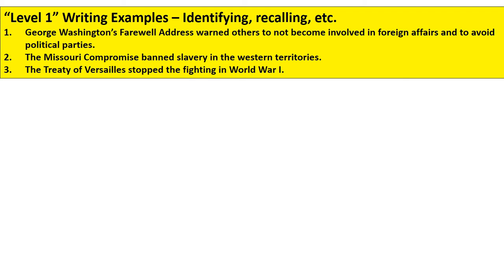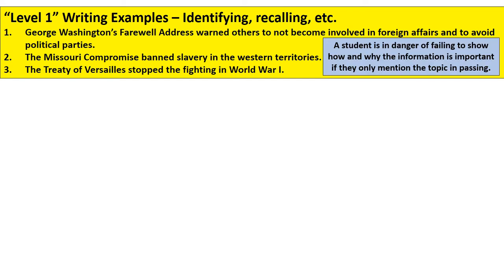Here's what I mean by level one writing. For example: Washington's farewell address warned others not to become involved in foreign affairs and to avoid political parties. The Missouri Compromise banned slavery in the Western territories. And the Treaty of Versailles stopped the fighting in World War I. A student is in danger of failing to show how and why the information is important if they only mention the topic in passing.